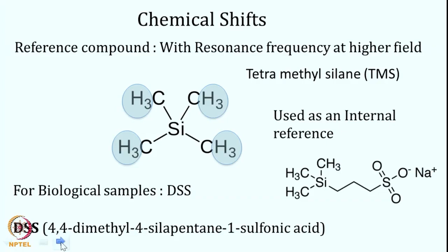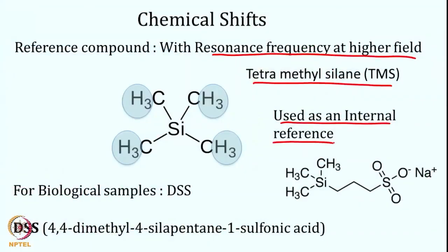The reference compound should ideally have maximum shielding with its resonance at the highest field, and its chemical shift is defined as 0 PPM. For most cases, tetramethylsilane (TMS) is used as the reference compound. In TMS, silicon has four methyl groups attached; the high electron density around those protons makes them highly shielded, and the resonance frequency is defined as 0 PPM. TMS is added to the experimental sample and used as an internal reference.